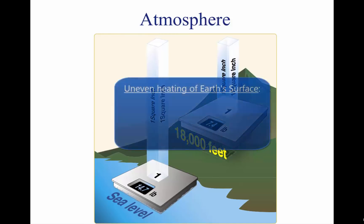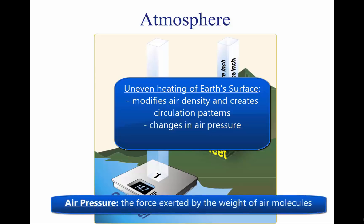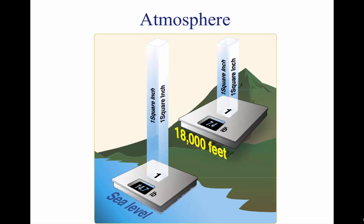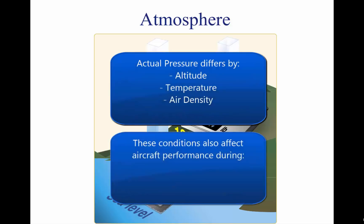The unequal heating of the Earth's surface not only modifies air density and creates circulation patterns, it also causes changes in air pressure, or the force exerted by the weight of air molecules. The actual pressure at a given place in time differs with altitude, temperature, and density of the air. These conditions also affect aircraft performance, especially with regard to takeoff, rate of climb, and landings.